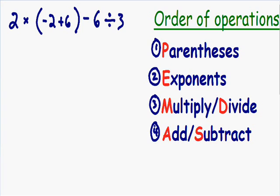If you have any trouble memorizing this, think of the word PEMDAS: P-E-M-D-A-S. That is the first letter of all our steps — P parentheses, E exponents, M multiply, D divide, A add, S subtract. Now let's use this order of operations to solve 2 multiplied by negative 2 plus 6 in parentheses, minus 6 divided by 3.